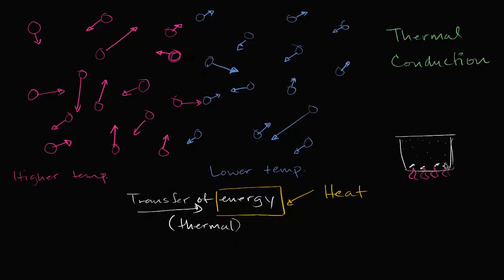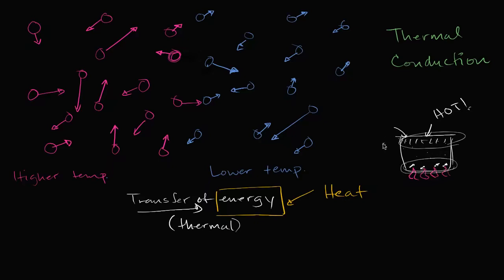Right when you turn your stove on, the top of the pot will still be cool, but the bottom is going to get hot very fast. But if you wait a few minutes, these metal particles are going to keep bouncing and vibrating into each other, and eventually the top of the pot is going to get quite hot. The way the top of the metal got hot was through thermal conduction — the metal at the bottom got hot first, then bounced and vibrated into its neighbors, transferring kinetic energy. Once again, you see this transfer of heat from a higher temperature region to a lower temperature region.